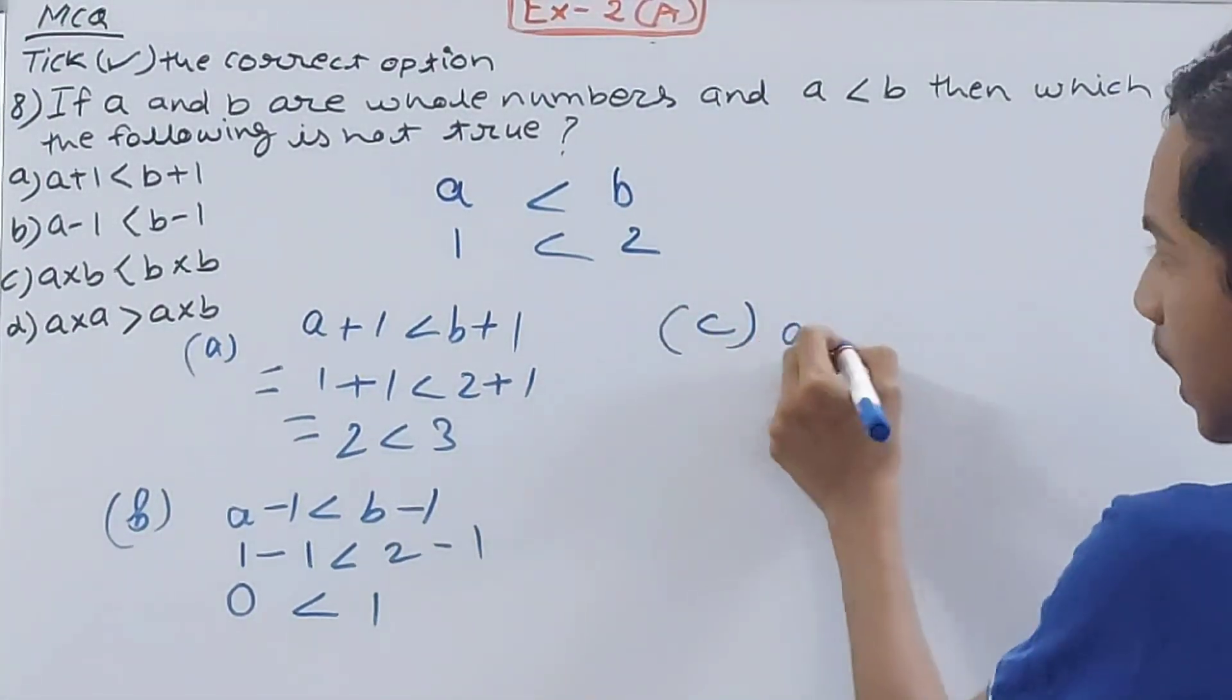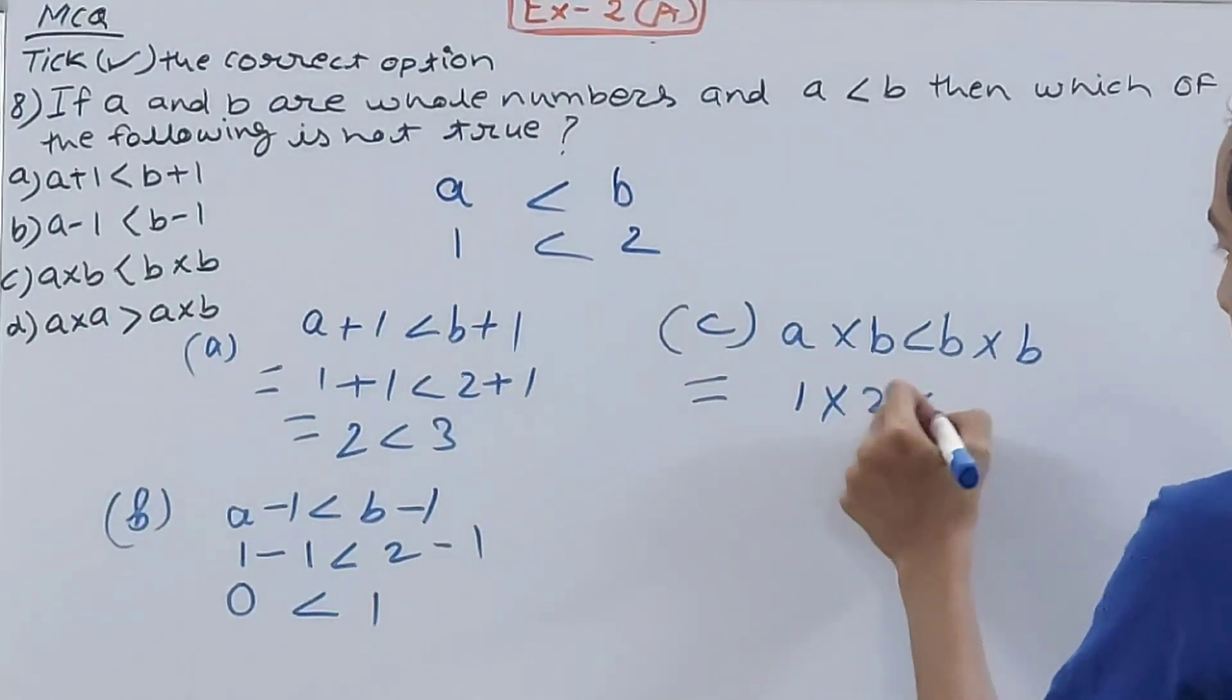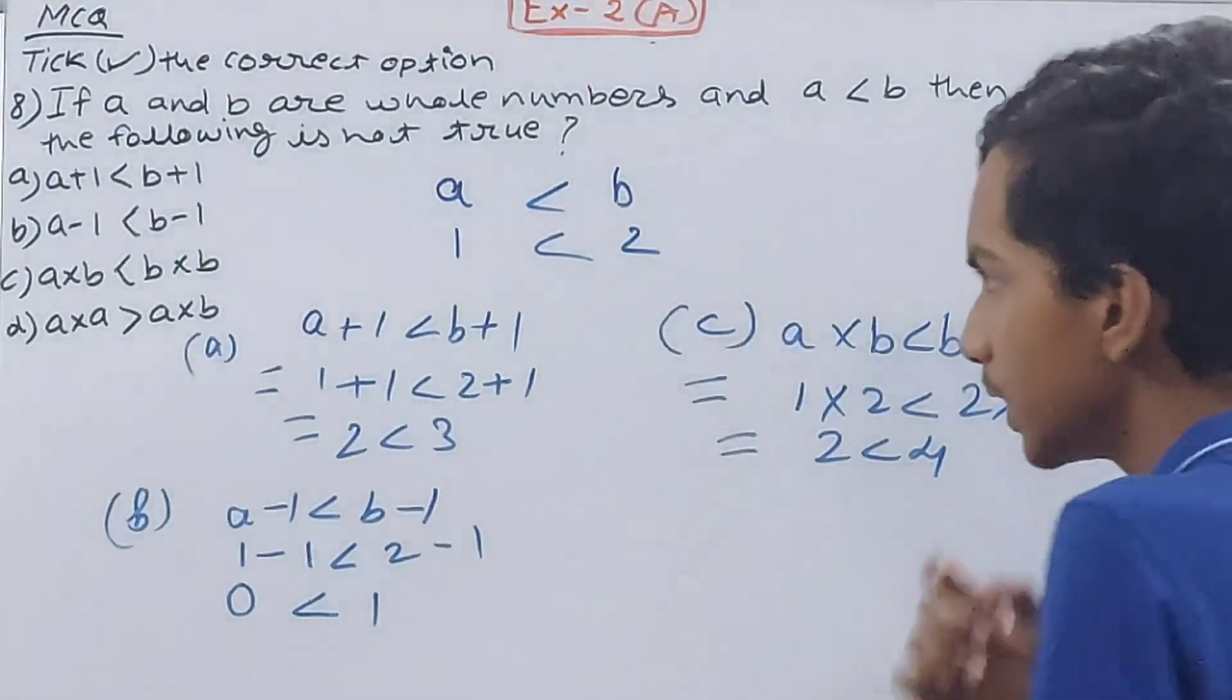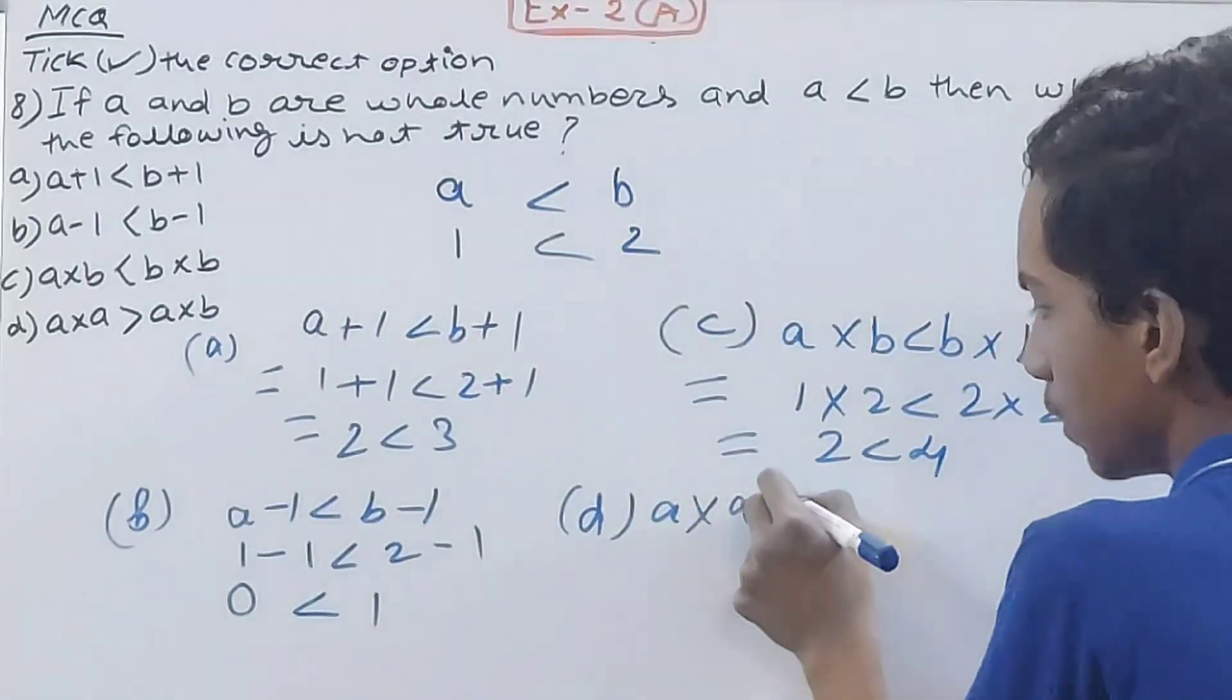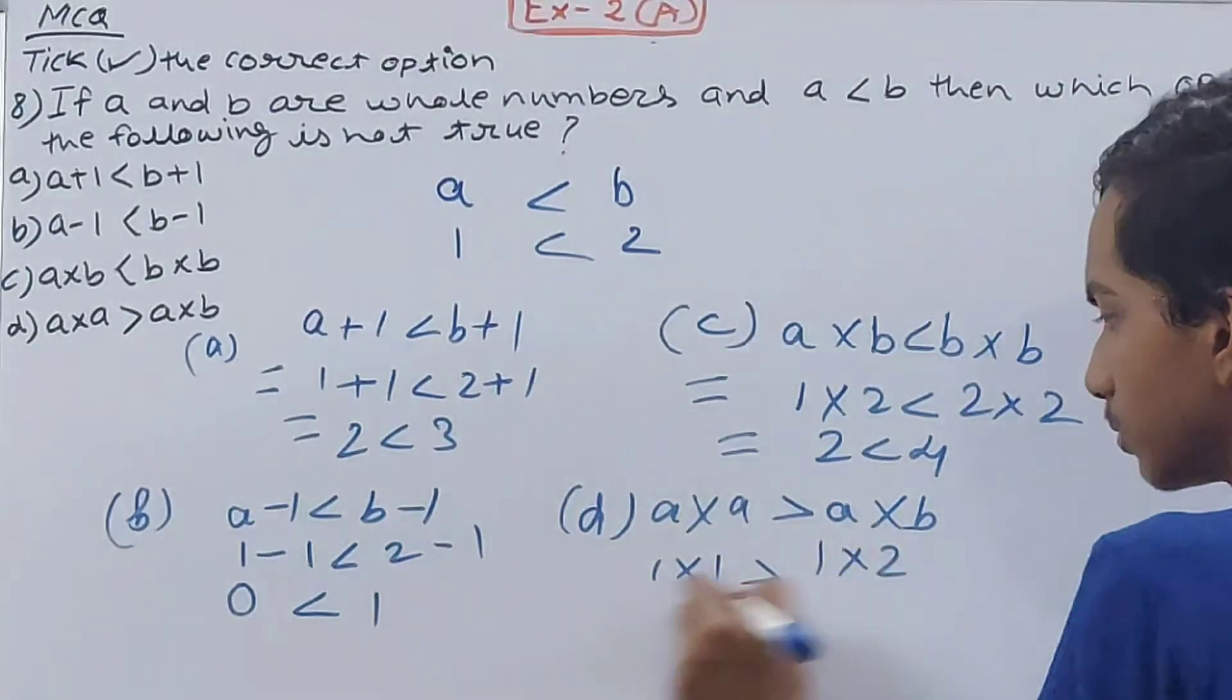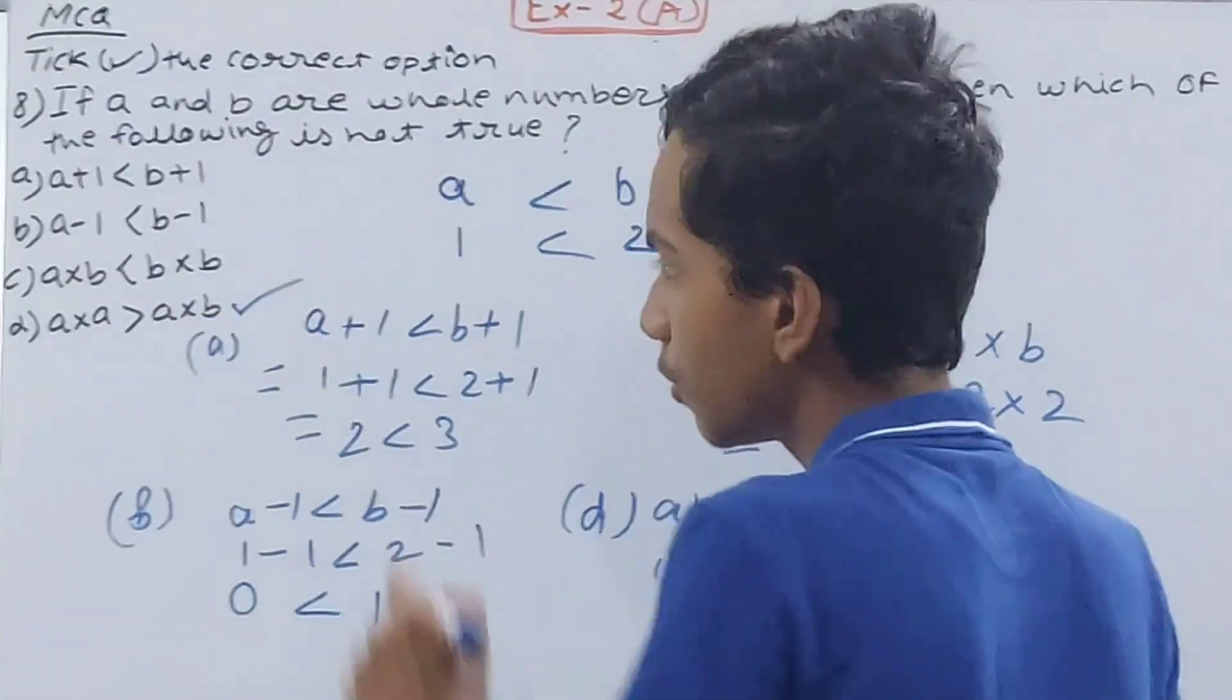Now see part C. A into b is less than b into b. Let's see, one into two is less than two into two. Two is less than four, yes this is also correct. Now see part D. A into a is greater than a into b. One into one is greater than one into two. That means one is greater than two. This is not correct, so this is false. That means this statement is not true. Option D is the correct answer.